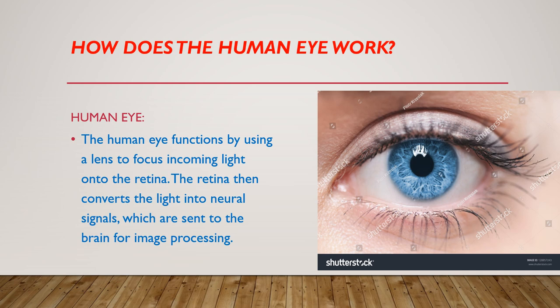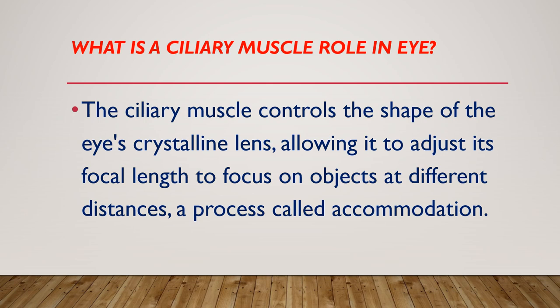What is the ciliary muscle's role in the eye? The ciliary muscle controls the shape of the eye's crystalline lens, allowing it to adjust its focal length to focus on objects at different distances, a process called accommodation.